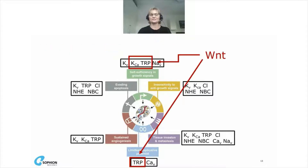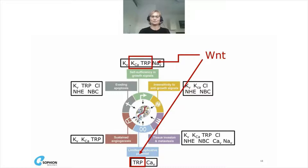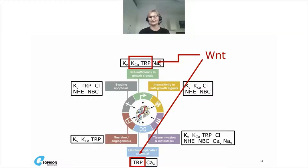Wnt proteins are secreted, lipid-modified glycoproteins that allow communication between cells. Wnt signaling is an evolutionarily conserved regulatory pathway governing numerous normal cellular and developmental processes such as cell fate determination, proliferation, and migration. However, abnormal Wnt signaling has been identified as a key mechanism in cancer biology. The red box on the first hallmark includes a calcium-activated potassium channel — not activated by Wnt directly, but activated by intracellular calcium release caused by the Wnt signaling pathway.